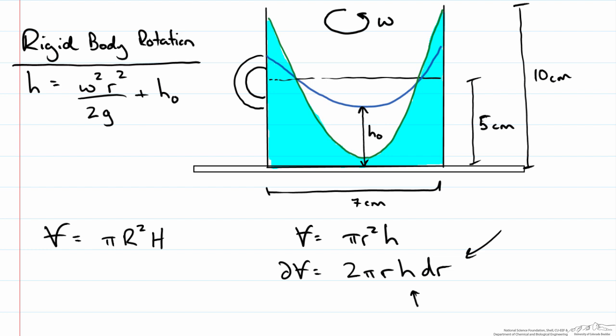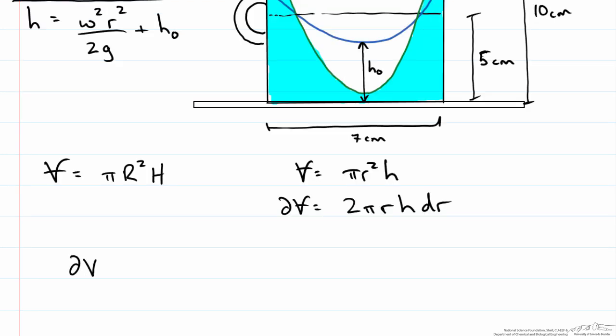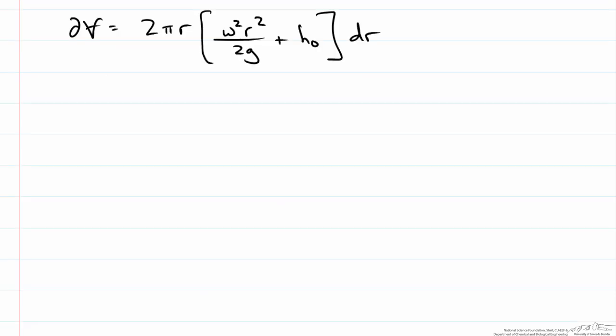And we just so happen to have that. So if we write our differential volume in terms of our parabola, we have ω²R²/2g plus H₀. We would evaluate this to determine the volume of our fluid when the mug is spinning.